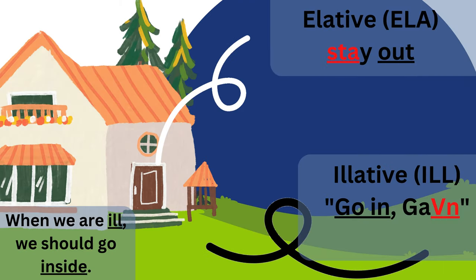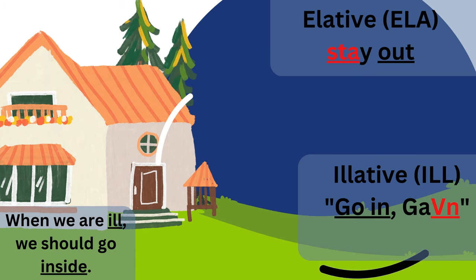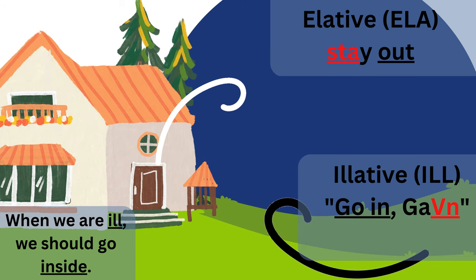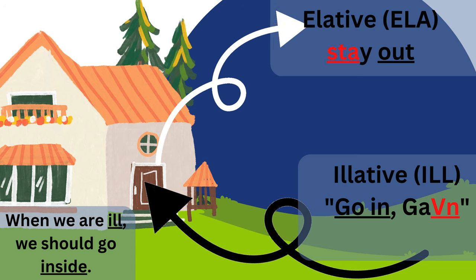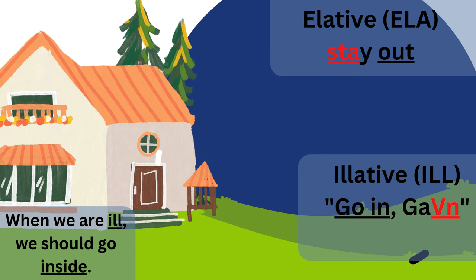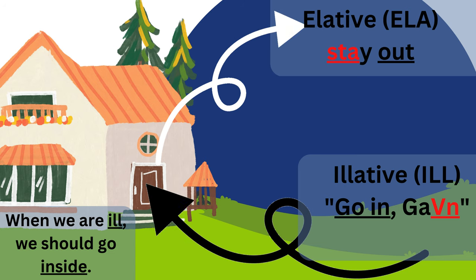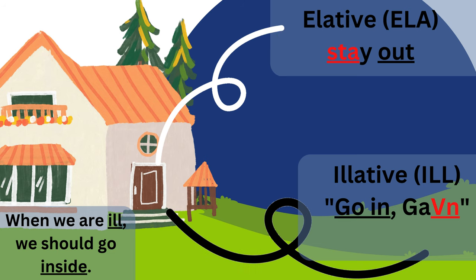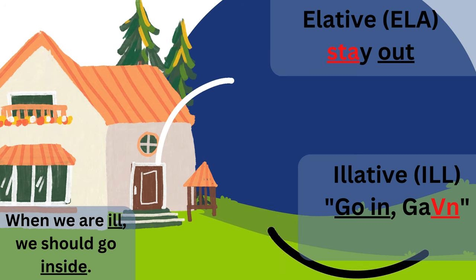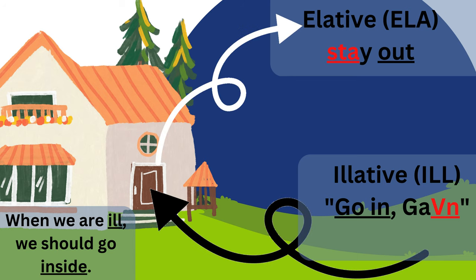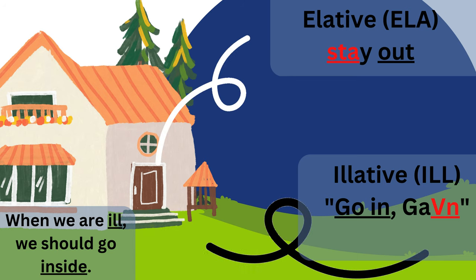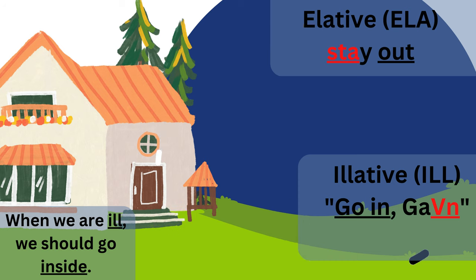The next case is the elative case. The elative case's basic meaning is coming outside of something. So in the case of a house, it would be walking out the door. It is also used for other functions such as referring to a period of time, being immediately next to something, or referring to an origin or cause of something else. Our mnemonic here is 'stay out' — -sta or -stä is the case ending for the elative case.